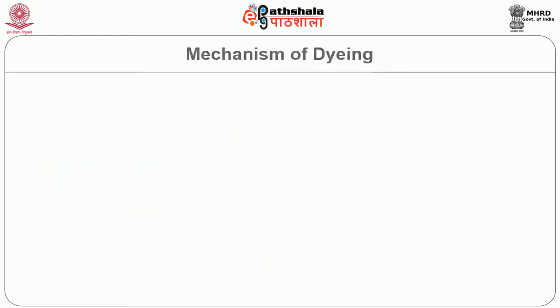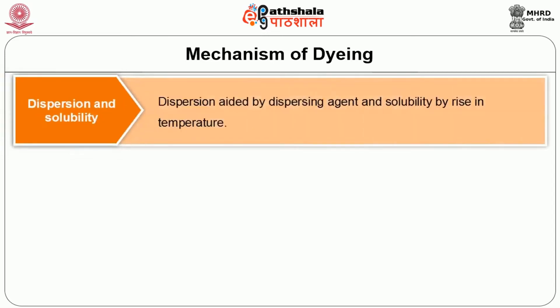Moving on to the mechanism of dyeing. There is a difference between water-soluble dye and water-insoluble dye. In water-insoluble dye, the dispersed dye behaves in a unique way — it must undergo dispersion first, then solubility. Dispersion is aided by a dispersing agent, and solubility is taken care of by raising the temperature to a certain extent.